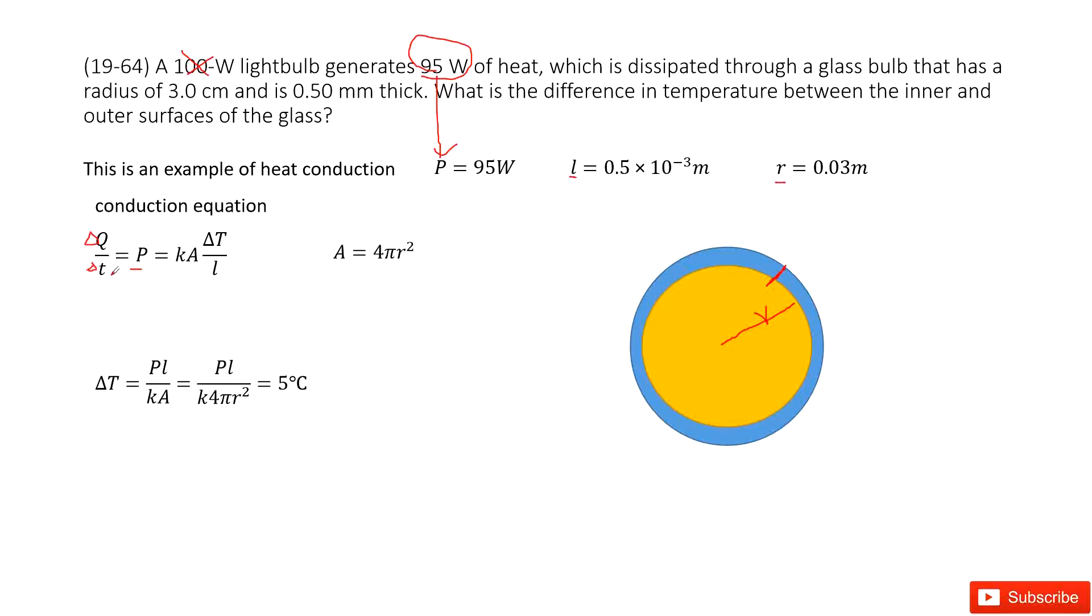So we write it there. And this conduction equation tells us delta Q over delta T equal to K A delta T divided by L. So we can get P equal to K A delta T over L.